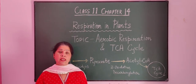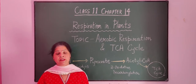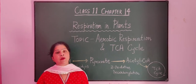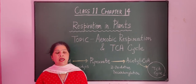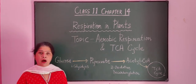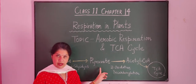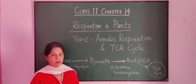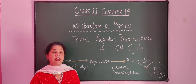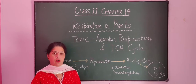In my previous lecture, I discussed in detail the first step of aerobic respiration, that is glycolysis. In glycolysis, one molecule of glucose, which is a six carbon compound, is split into two molecules of pyruvate, which is a three carbon compound. This reaction, glycolysis, takes place in the cytoplasm in the absence of oxygen.